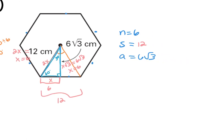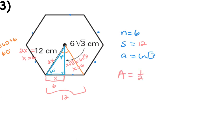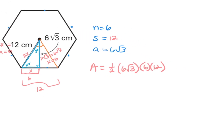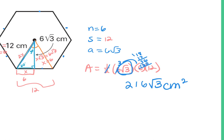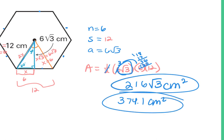That's the last piece of information needed for the area. So one-half times a (which is 6√3) times n (which is 6) times s (which is 12). Simplifying: half of 6 is 3, times 6 is 18, times 12 is 216, giving 216√3 centimeters squared as the exact answer. If you multiply it out and round to the nearest tenth, you get 374.1 centimeters squared.